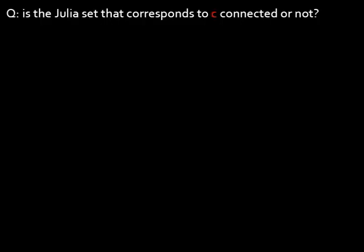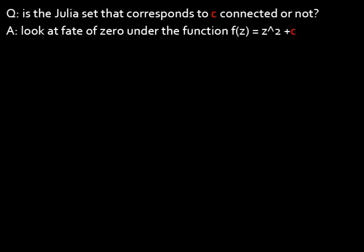So this is wonderful. You can now give me any complex number c and I can tell you right away if the corresponding Julia set is connected or not. The way I'm going to do this is that I will simply check if 0 stays bounded or if it escapes to infinity, as it is repeatedly mapped under the function f(z) = z² + c.